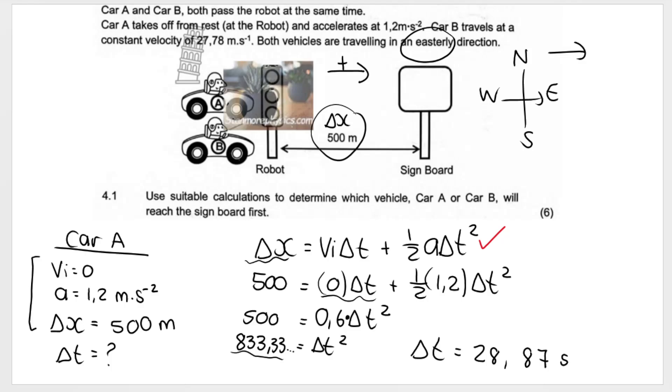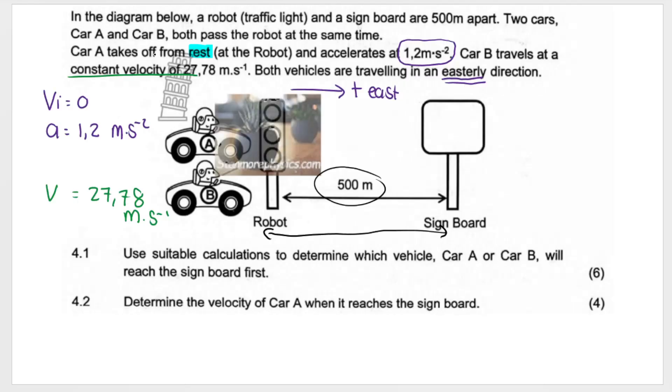For Car B, remember, we are told that the car is traveling at a constant velocity.